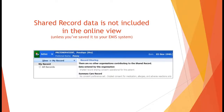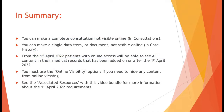And lastly, what about the shared record? Other health service information that you can view through the shared record on EMIS will not be accessible unless you have chosen to file that data directly into your GP record. In summary, you can opt to make a complete consultation not visible online, or you can opt to make a single entry not visible online in Care History.